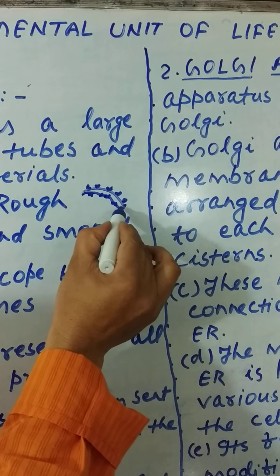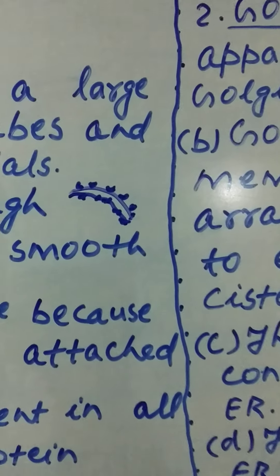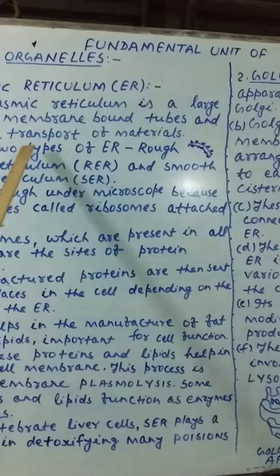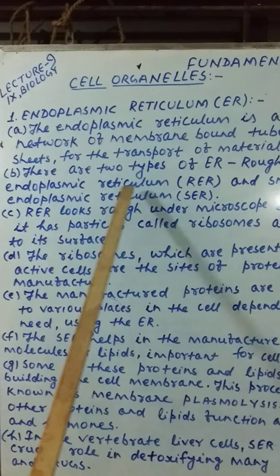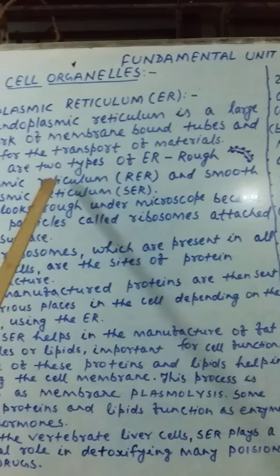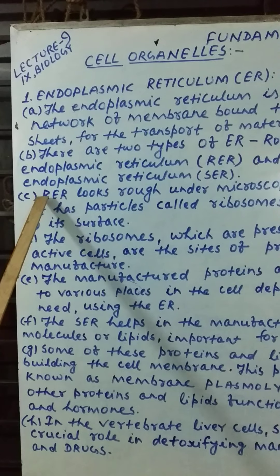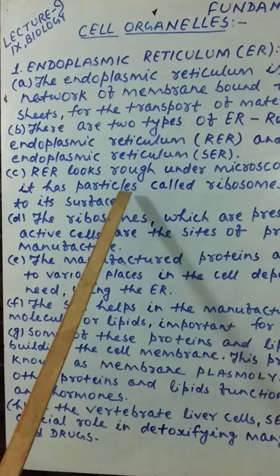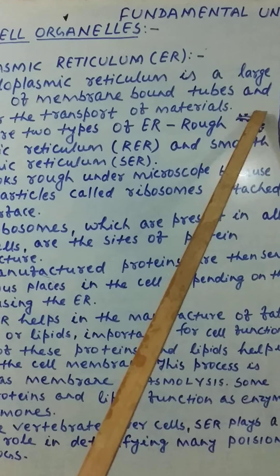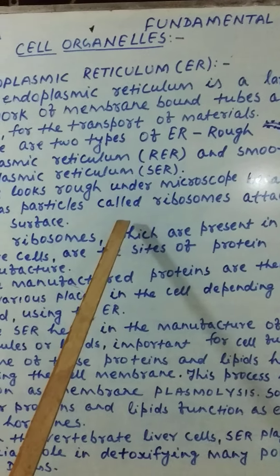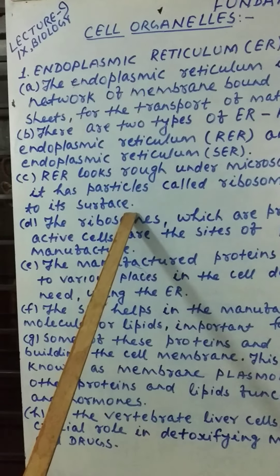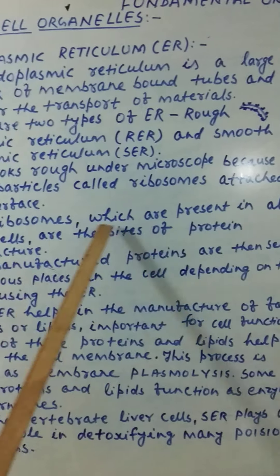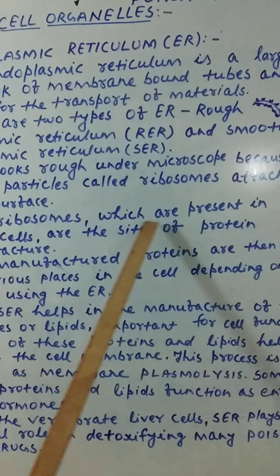If ribosomes are not present, it is called smooth endoplasmic reticulum. Rough endoplasmic reticulum looks rough under the microscope because it has particles called ribosomes — dot-like structures — attached to its surface. The ribosomes, which are present in all active cells, are the sites of protein manufacture.